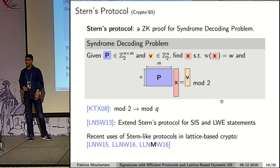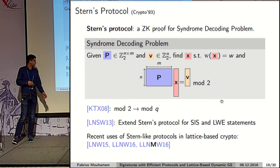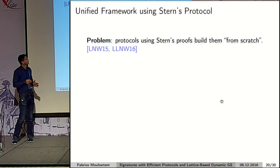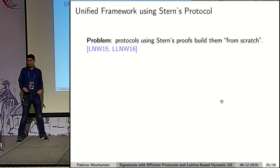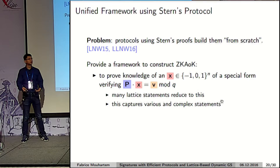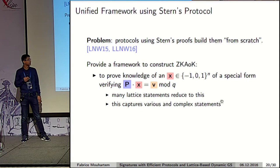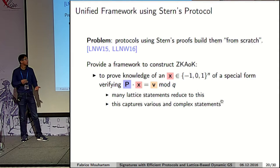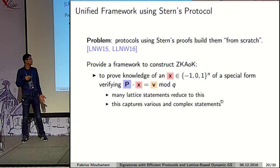Since last year, many protocols use this Stern-based signature approach. The problem is that for some of these schemes, a Stern protocol is built from scratch each time. To avoid this, we propose a framework to construct a zero-knowledge argument of knowledge for linear modular equations of a given form. Thanks to the linearity of lattice statements, many statements can be reduced to this form, and by proving special properties on these equations, we can also capture more complex statements.